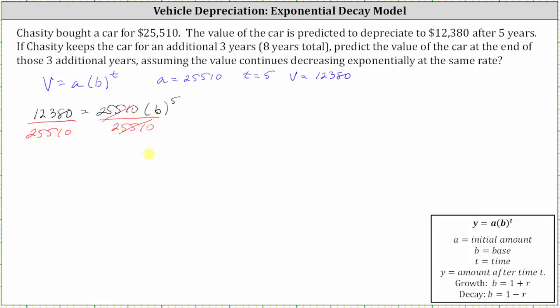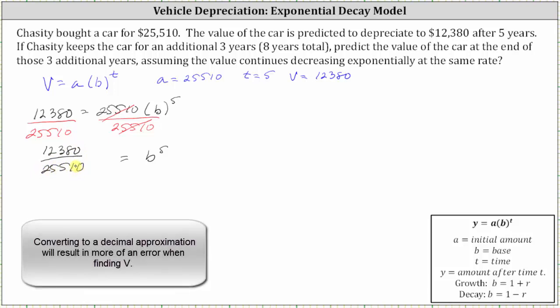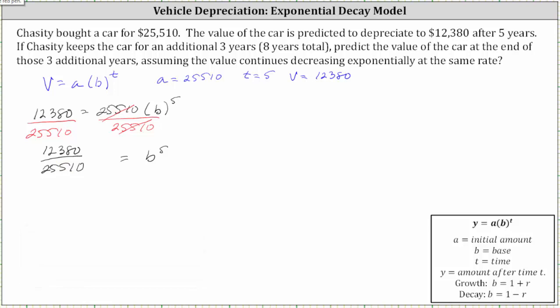Simplifying, we have b to the fifth is equal to 12,380 divided by 25,510. Now we could simplify this fraction or we could also get a decimal approximation, but I'm going to go ahead and leave it in this form. And now to solve for b, we need to undo the fifth power by taking the fifth root of both sides of the equation or raising both sides of the equation to the reciprocal power of five, which would be one-fifth. Let's raise both sides of the equation to the one-fifth power.